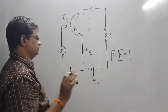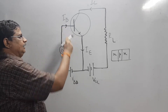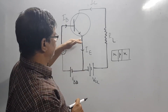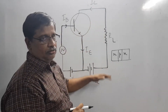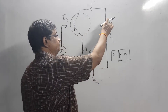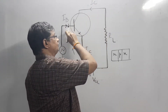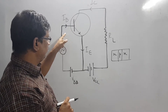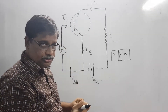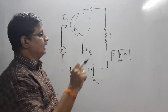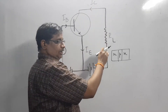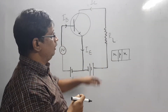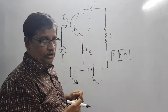Now, how does the transistor amplify? When you increase the base-emitter voltage, the base current increases, and any small increase in base current results in an almost proportional increase in collector current. If you increase the input voltage, the base current increases, and there is a similar increase in the collector current. This collector current, flowing through a load resistor of very high value, causes a large potential difference across the load resistor, giving a much higher output voltage.